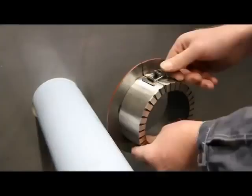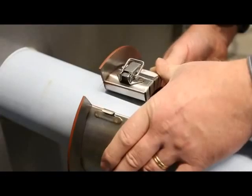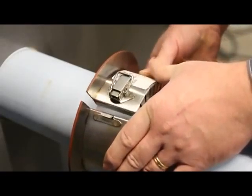Release the toggle fixing of the fire penetration seal and open the seal. Wrap the fire penetration seal around the pipe. Close the fire penetration seal and lock it by closing the toggle fixing.